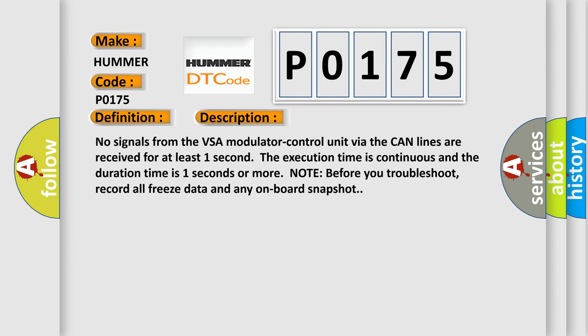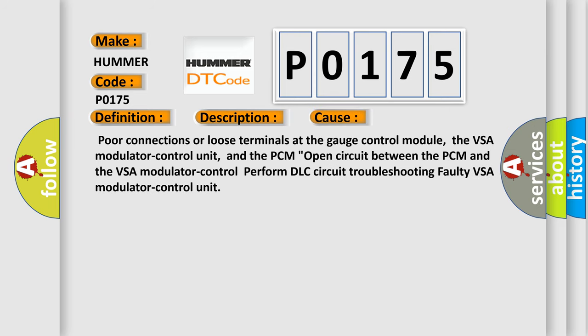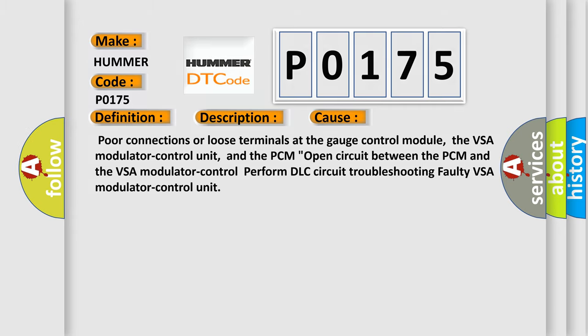No signals from the VSA modulator control unit via the CAN lines are received for at least one second. The execution time is continuous and the duration time is one second or more. Note: before you troubleshoot, record all freeze data and any onboard snapshot. This diagnostic error occurs most often in these cases: poor connections or loose terminals at the gauge control module, the VSA modulator control unit, and the PCM; open circuit between the PCM and the VSA modulator control unit; perform DLC circuit troubleshooting; or faulty VSA modulator control unit. The Airbag Reset website aims to provide information in 52 languages.